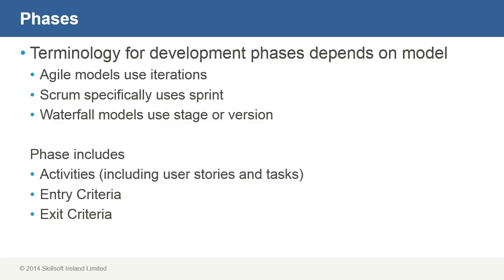The waterfall method typically uses nomenclature like stage or version, but I'll discuss it in terms of phases. Waterfall projects are sectioned off into a sequence of phases, each one needing to be completed before the subsequent phase can begin — you can sort of think of it as a stage gate process. There usually isn't any overlap between phases, although it does happen and is perfectly acceptable. Like stage gate, the waterfall model delivers some sort of output at phase completion, and that output is the input for the subsequent phase.